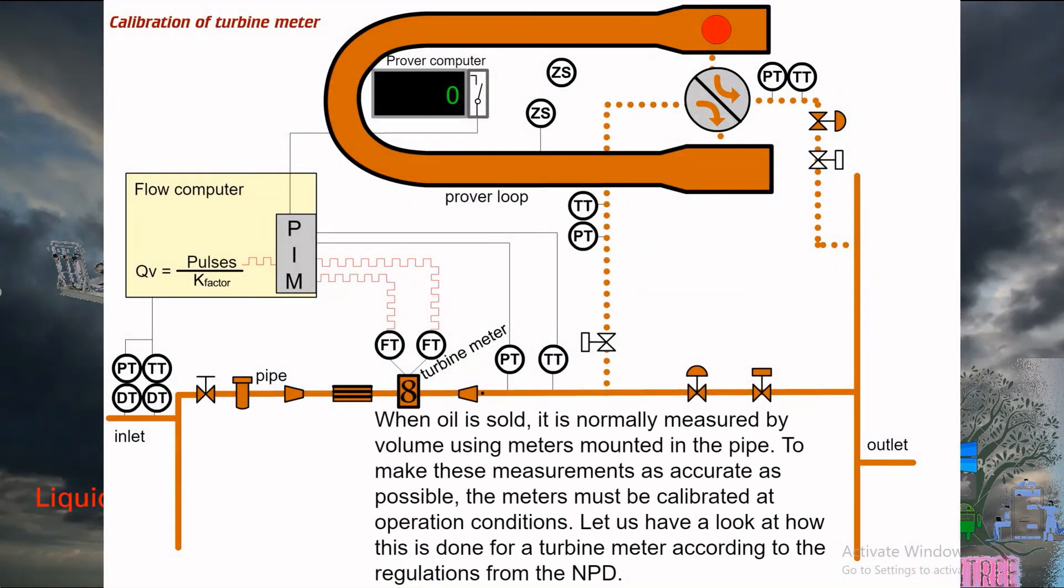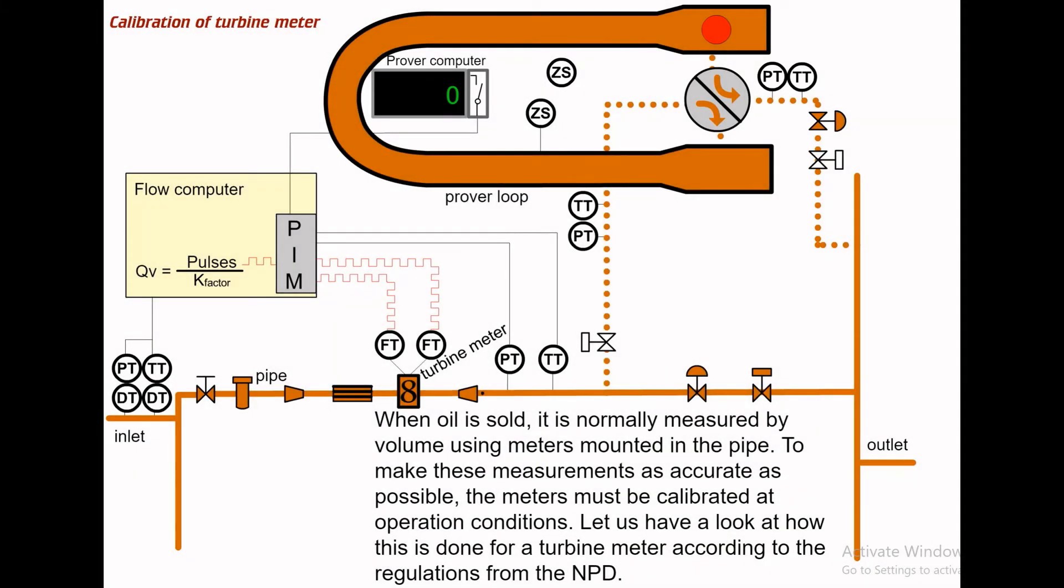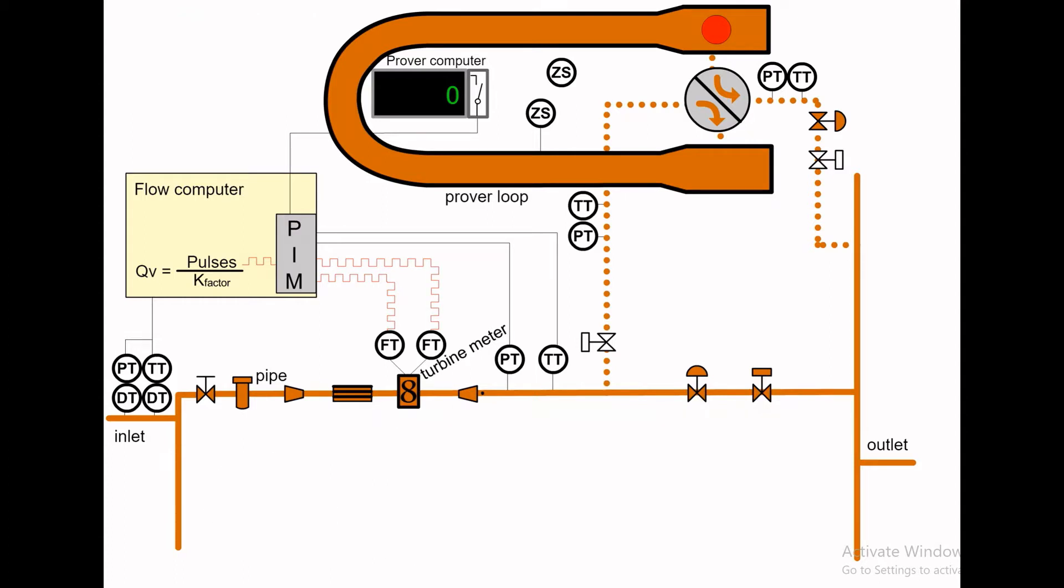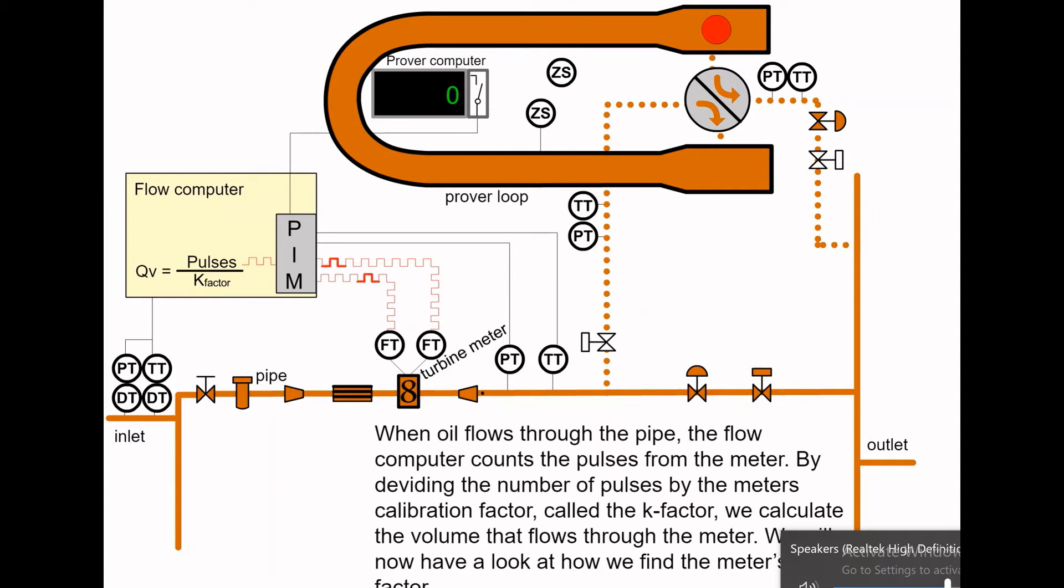Let's have a look at how this is done for a turbine meter according to the regulations from the Norwegian Petroleum Department. When oil flows through the pipe, the flow computer counts the pulses from the meter. By dividing the number of pulses by the meter's calibration factor, called the k-factor, we calculate the volume that flows through the meter. We will now have a look at how we find the meter's k-factor.